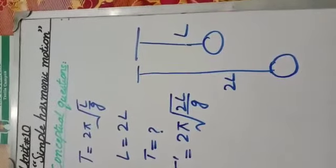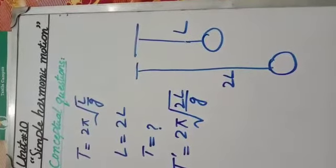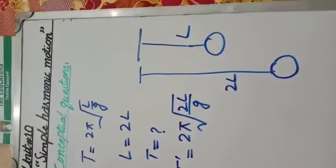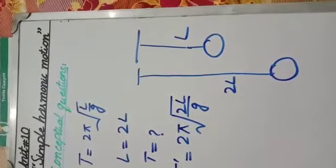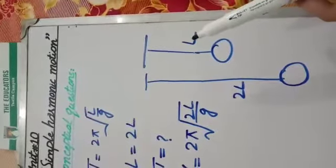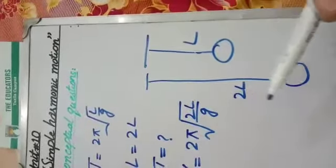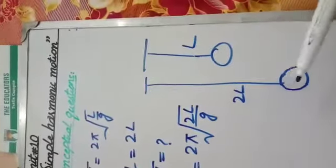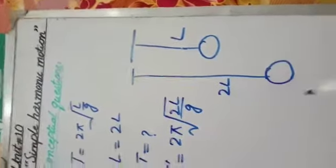The question number 1 is: if the length of simple pendulum is doubled, what will be the change in its time period? If the length of simple pendulum is doubled, what will affect its time period?